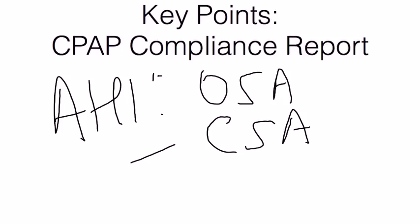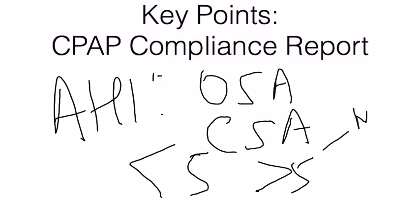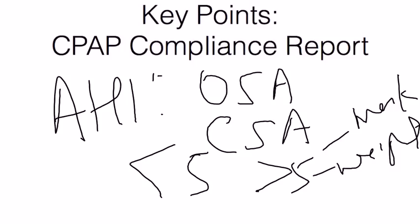Look at the AHI, and ideally you want a level of less than 5. If the number is above 5, there are a few things to take note of. One is mask leak, as mask leak itself may be read as an elevated AHI in some patients. The other is to see whether the patient has gained any weight, as weight gain may cause the patient not to be as effectively treated with CPAP, hence the AHI may rise. The other factor is sedatives — if the patient has been put on different medications, it may increase their risk of OSA, and if they weren't on the same medications during the CPAP titration, the AHI may rise.